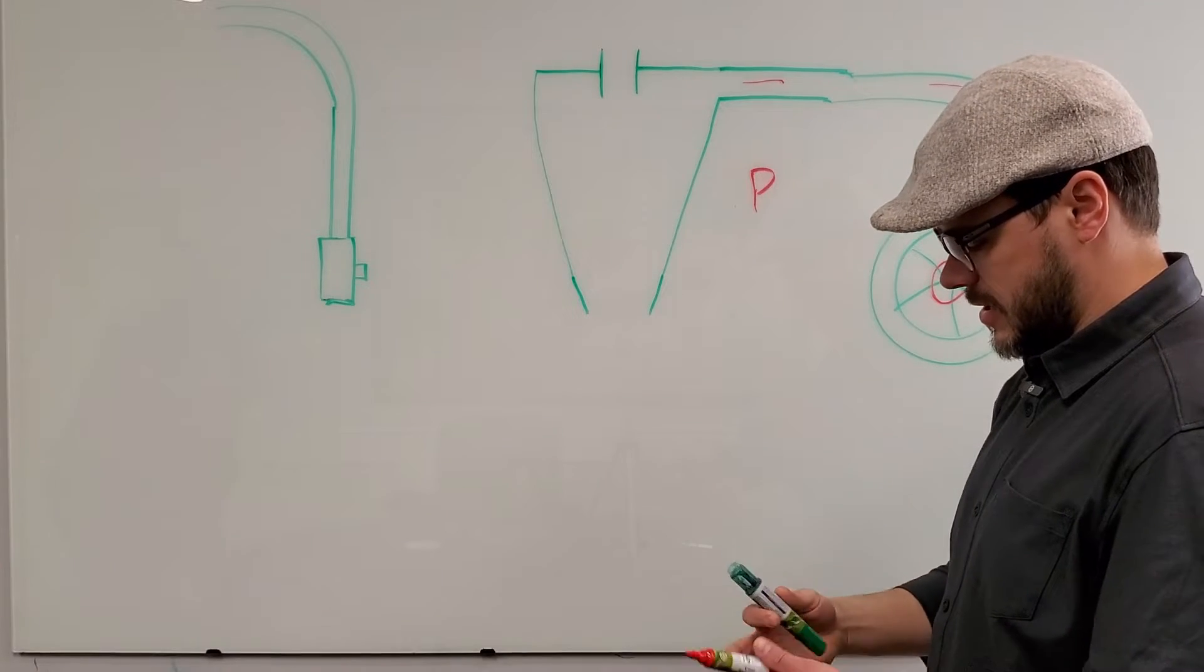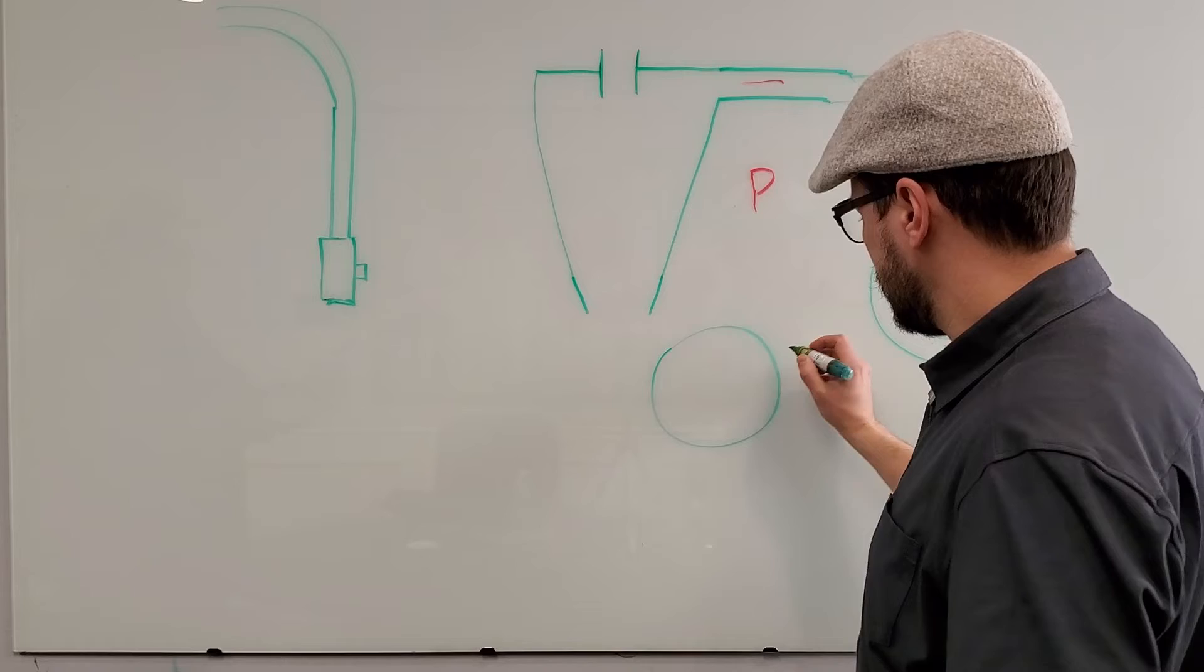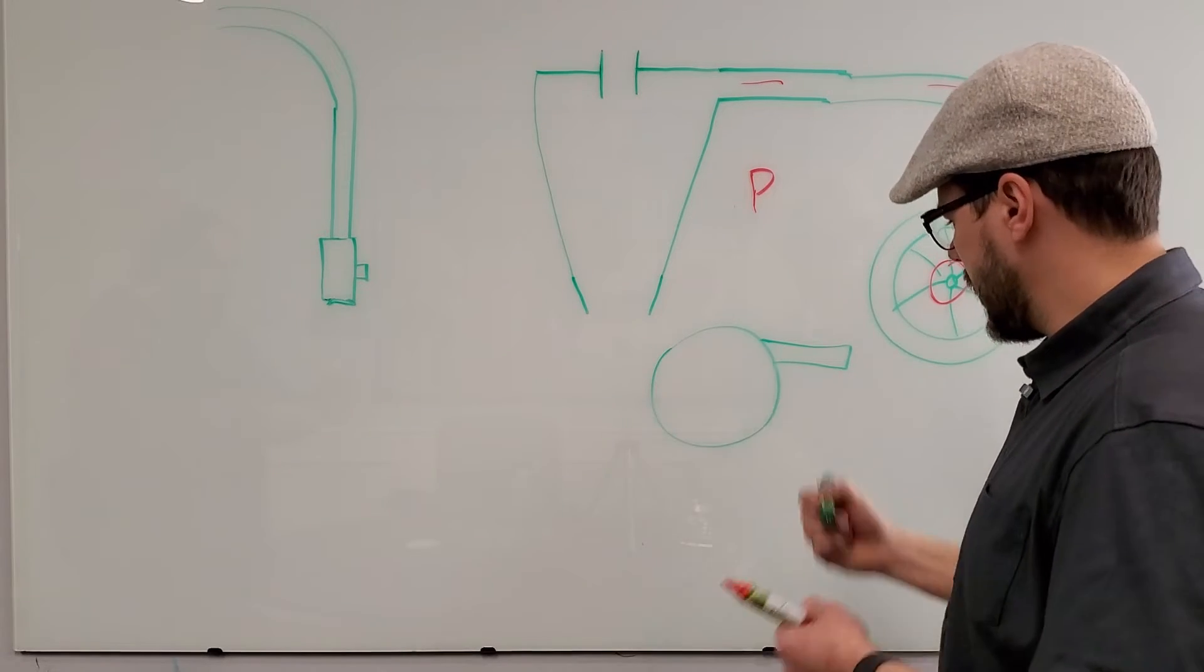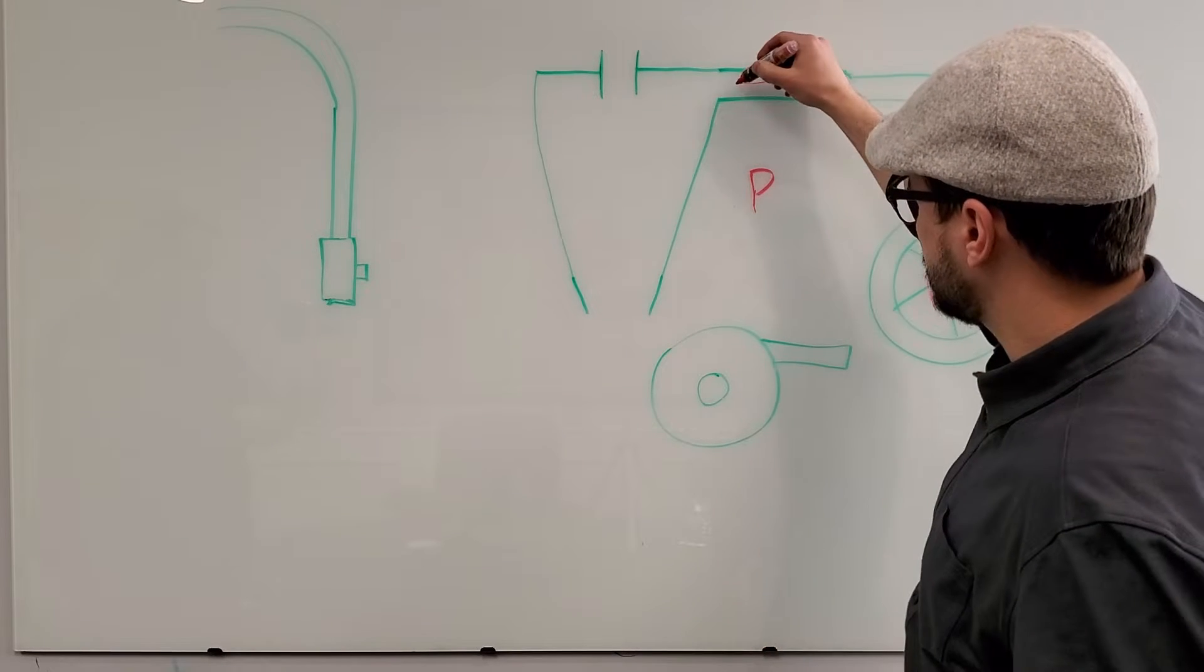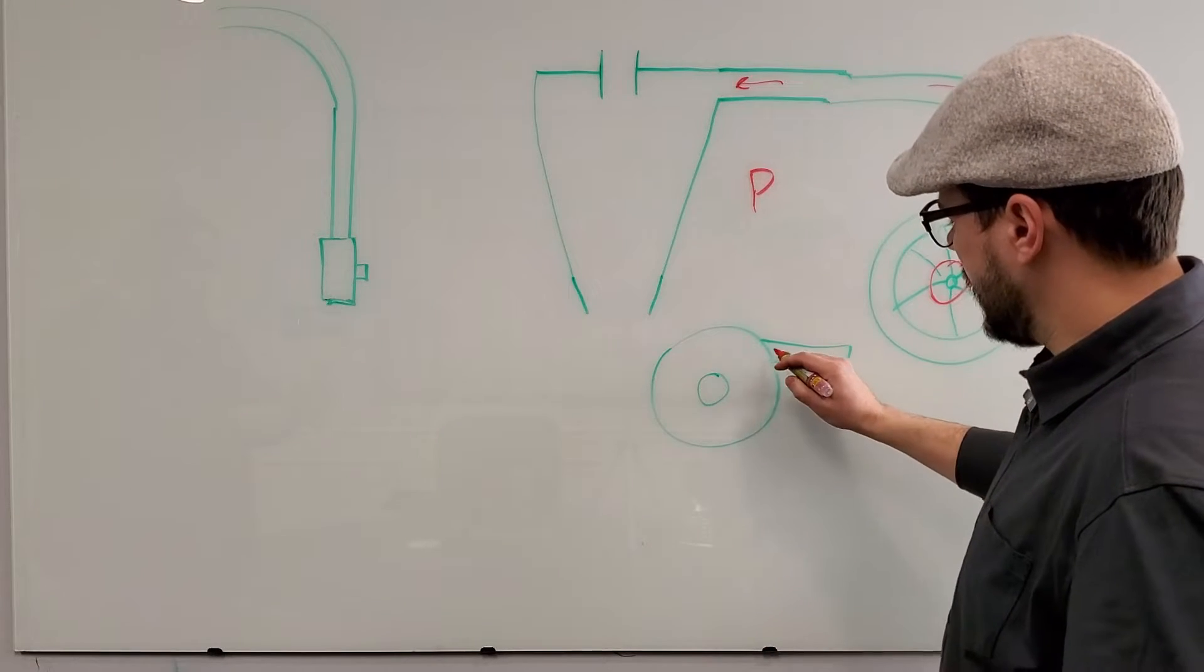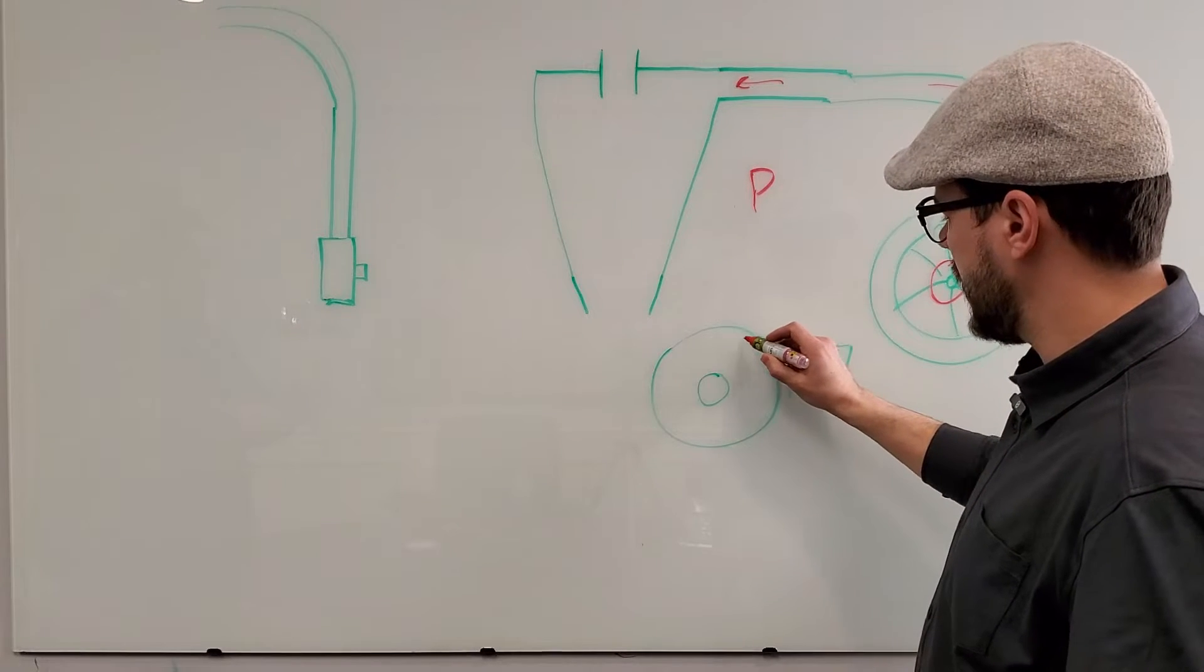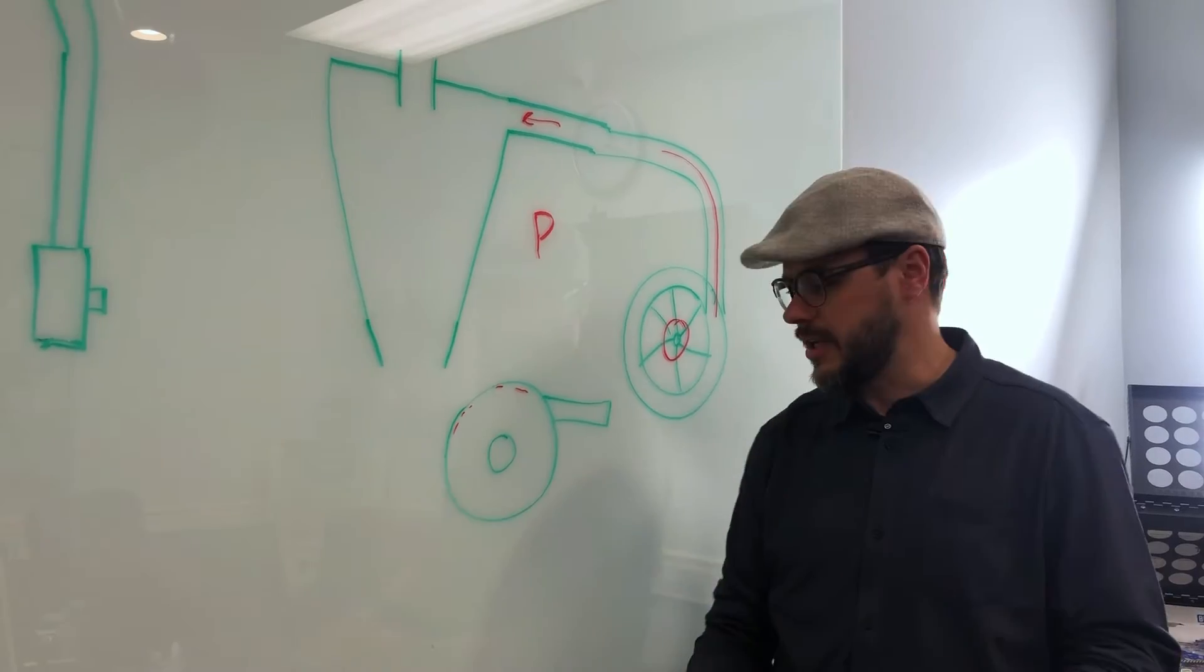Now once it reaches the cyclone walls, we'll make a top view here. So this here is your inlet, and this is your cyclone. What happens when the material reaches here, the heavier particles have higher velocity because they're heavier, so they come and touch the outside wall first.